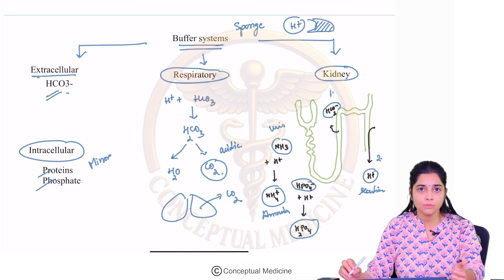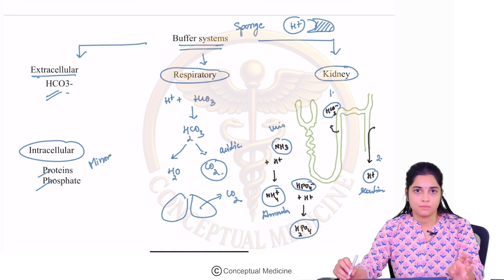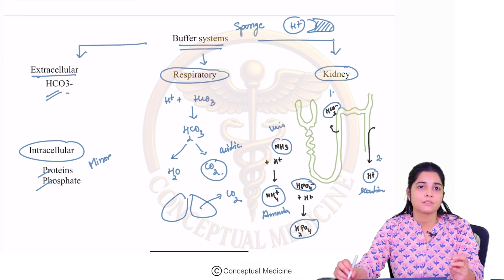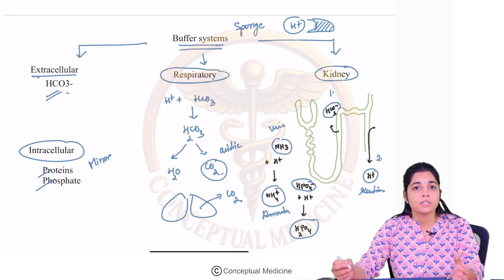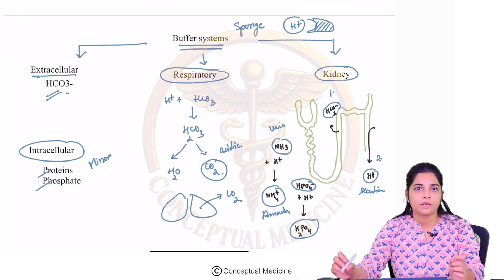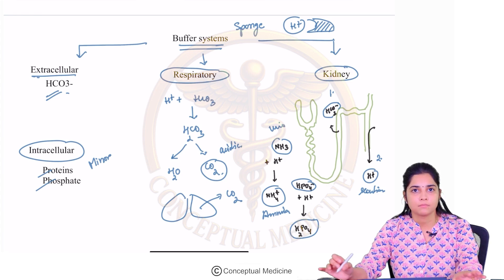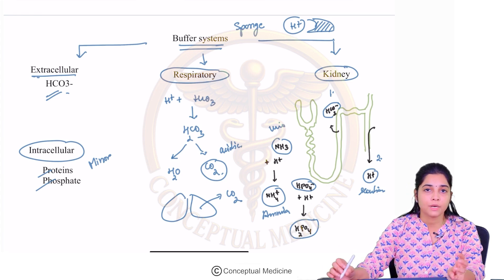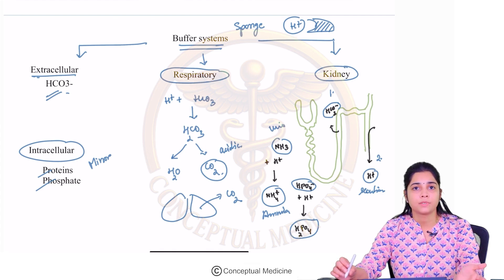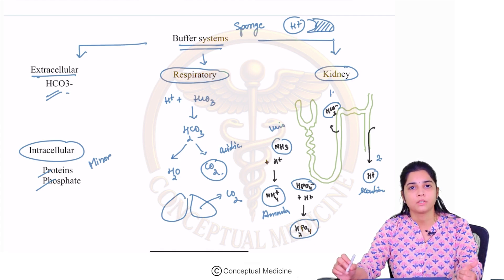So to summarize: we have discussed what acidosis is, the aim of the body to maintain neutral pH, and what buffer systems are — sponges which prevent excessive accumulation of H+ ions. These can be extracellular, intracellular, respiratory, and renal buffer systems. The most important is bicarbonate. Secondly, carbon dioxide gas is excreted from the lungs. Thirdly, ammonium buffers in the DCT remove H+ as ammonium ions.